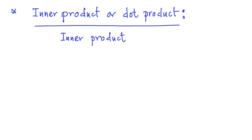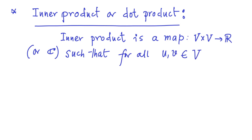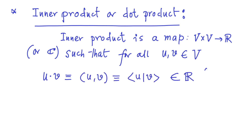In a given vector space V, inner product is a map from two copies of the vector space V cross V to the set of real numbers or the set of complex numbers depending on the situation, such that for all u and v which belong to the vector space V. The inner product is denoted either using the notation u·v, or u comma v within a parenthesis, or using bracket notation.